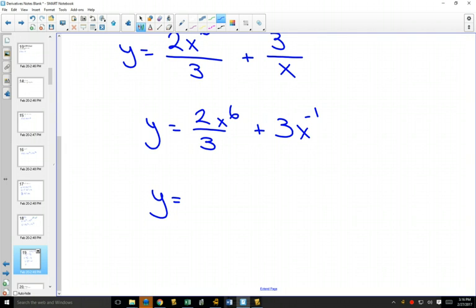And now we can apply our power rule. If I bring that 6 out in front, I'm going to get 12 over 3. But 12 over 3 is just 4. Subtract 1 from the exponent. If I bring the negative 1 out in front, I'm going to get a negative 3 and subtract 1 from the exponent. And this will be the derivative.